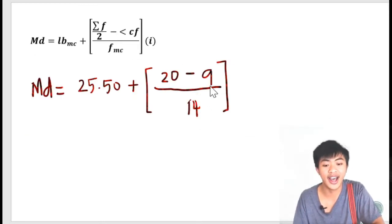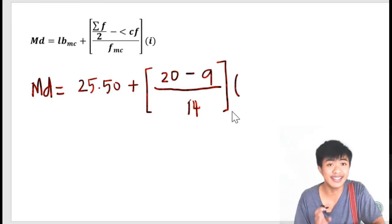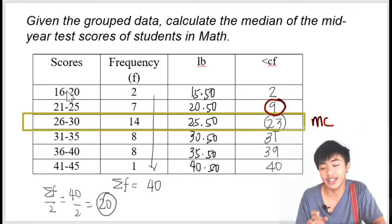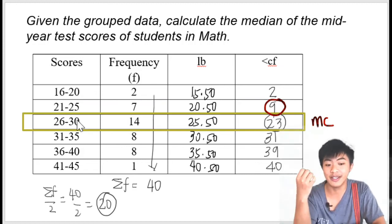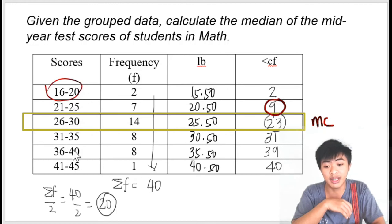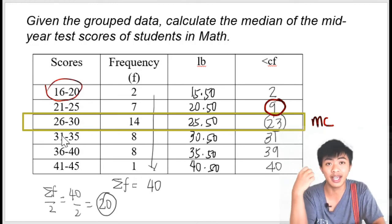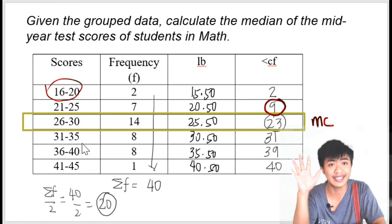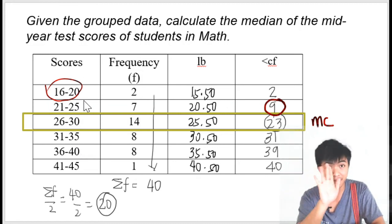And this last part is the class size — this is how wide the class interval is. Sabi ko nga kanina, we can obtain the class size simply by counting. So ito ang ating class interval — pili ka lang ng isa, paparehas din lang naman yung mga class size. To get the class size, simply count starting from 16: 16, 17, 18, 19, 20 — yung class size natin is 5. So now we can simply input this in the calculator.